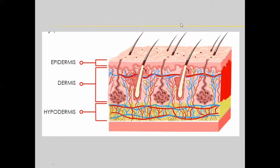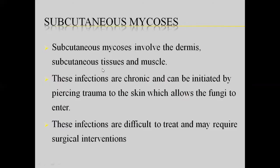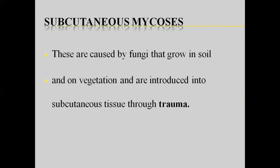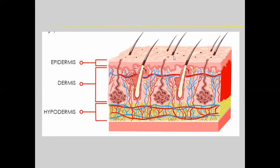When fungi penetrate more deeply through skin trauma, they invade the dermis layer and can involve subcutaneous tissues, and even muscle. The fungi present in soil or the environment are transmitted through trauma or injury to the skin. They enter through exposed areas into subcutaneous tissues or dermis and cause subcutaneous fungal diseases.